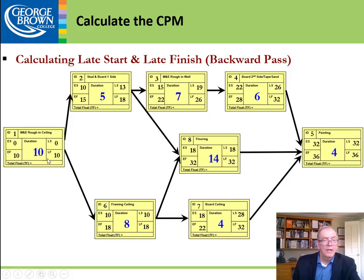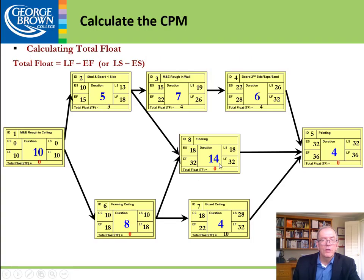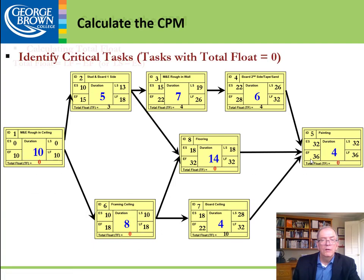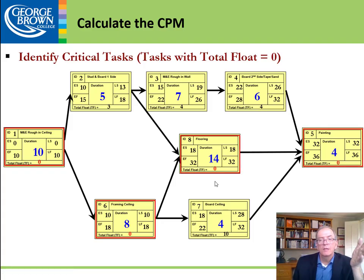The float is the difference between the late and early finishes, or between the late and early starts. Working through: 10 minus 10 = 0, 18 minus 15 = 3, 13 minus 10 = 3, 26 minus 22 = 4, 19 minus 15 = 4, 32 minus 28 = 4. Both starts and finishes must give the same float value, or a mistake was made. Following the zeros of float all the way through gives us our critical path.